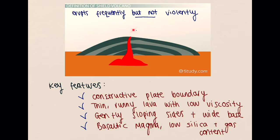So when this magma erupts as lava, it's very thin and very runny, meaning the lava can travel over a longer distance before it solidifies. As a result, when this lava erupts and travels, it produces very wide, gently sloping sides with a very wide base at the bottom, as the lava is able to run a long distance before solidifying.